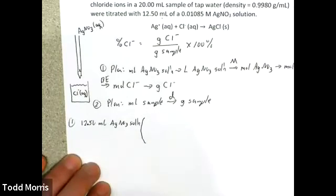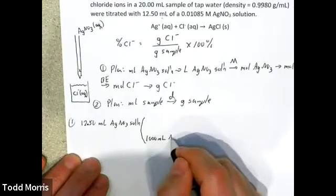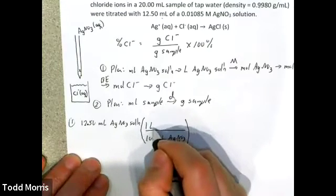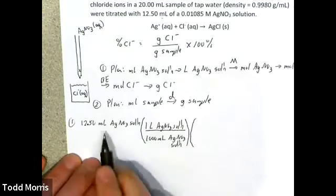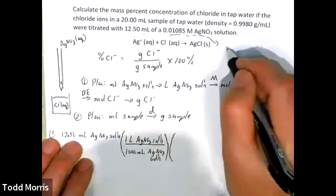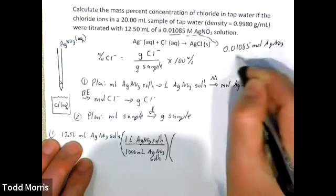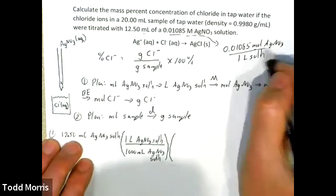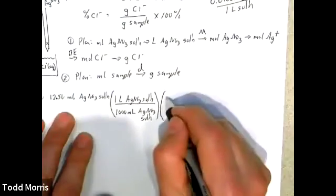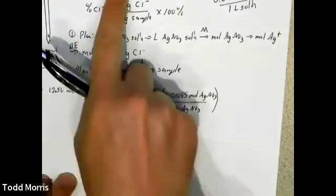Convert that to liters: there are 1,000 milliliters per liter, so 1,000 milliliters of silver nitrate solution is equivalent to one liter of the solution. I convert from milliliters to liters so I can use molarity, because a 0.01085 molar silver nitrate solution means there are 0.01085 moles of silver nitrate dissolved per one liter of solution. I can use this as a conversion factor to convert from liters to moles.